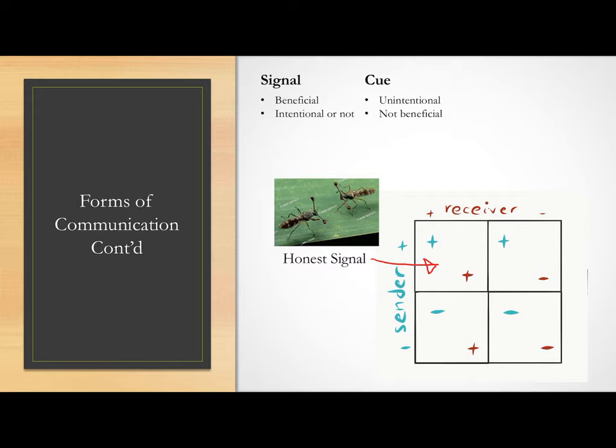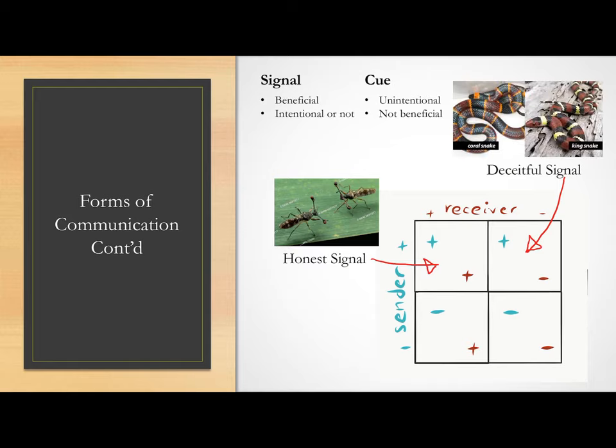If a signal is beneficial to the sender but detrimental to the receiver, then it's a deceitful signal. An example of this is Batesian mimicry, which is when an animal which isn't poisonous or venomous, like this kingsnake, has evolved to look like a different species which is, like this coral snake. Batesian mimicry is beneficial to the mimic animal, the kingsnake, because it's less likely to be eaten or attacked, but it's detrimental to the animal that wants to eat the mimic because that animal is missing out on a meal for no reason.